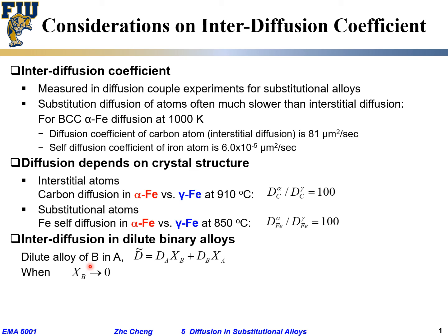As a result, look here: if X_B goes towards zero and D_A and D_B are both finite, the first term D_A·X_B goes towards zero, and X_A goes towards one. Which means when X_B goes towards zero, the system interdiffusion coefficient approaches D_B. When the system is very very diluted, the interdiffusion coefficient is pretty much controlled by the solute atom — by how fast the solute atom will diffuse.